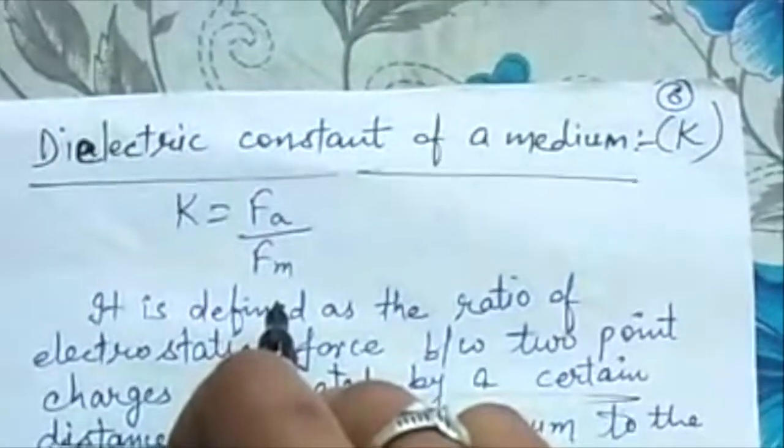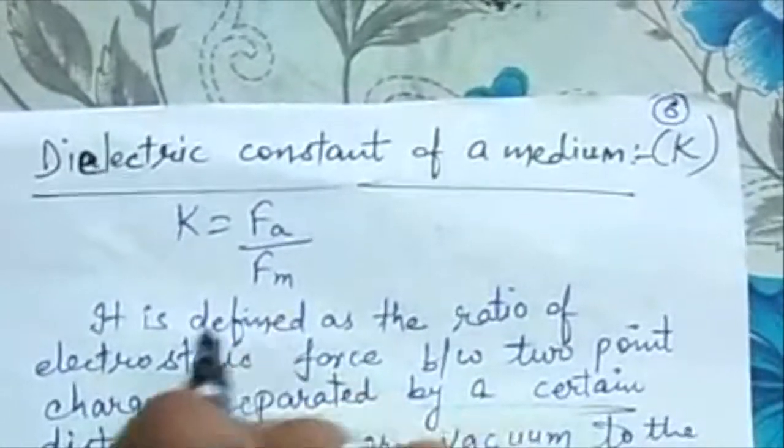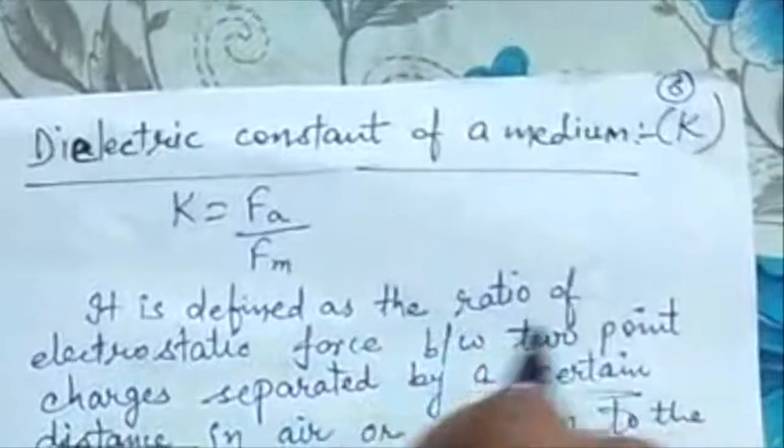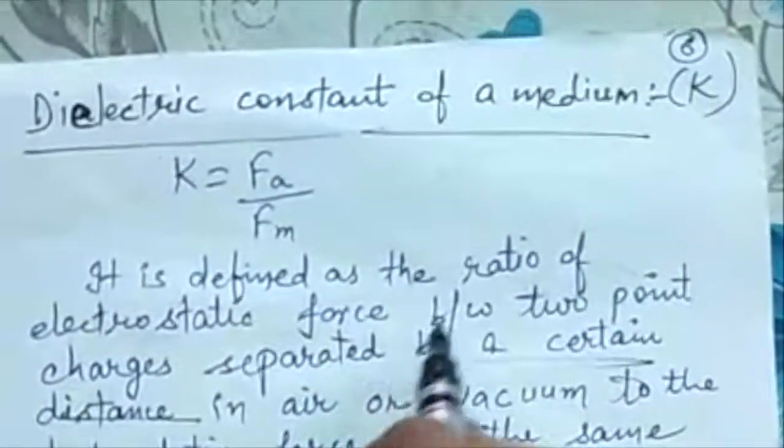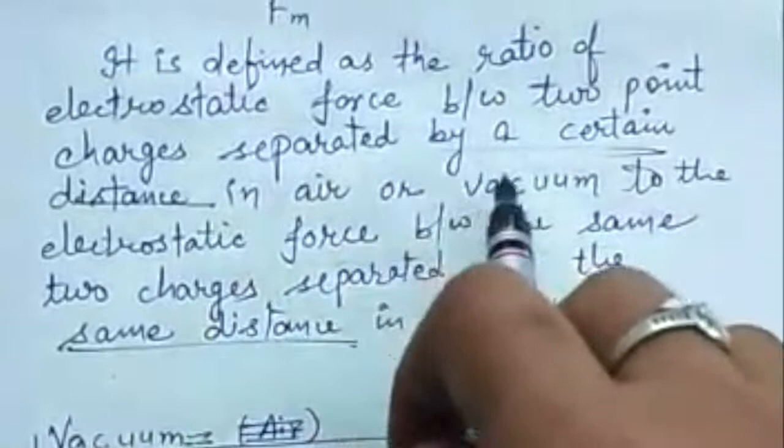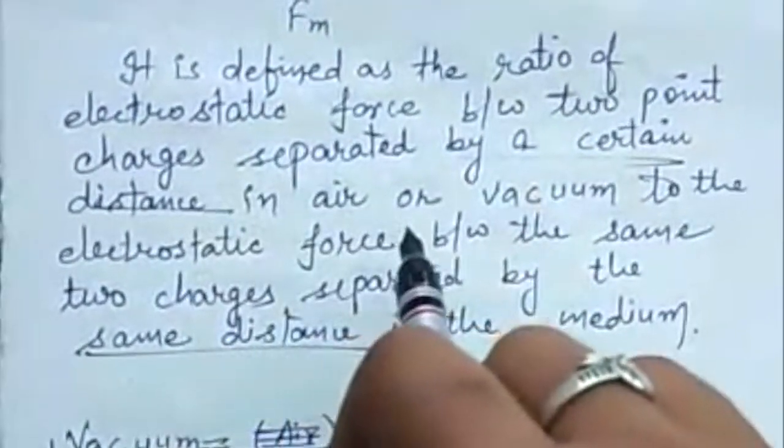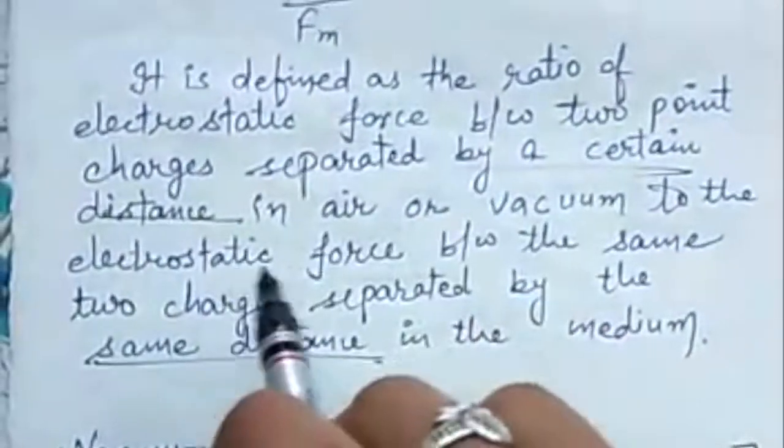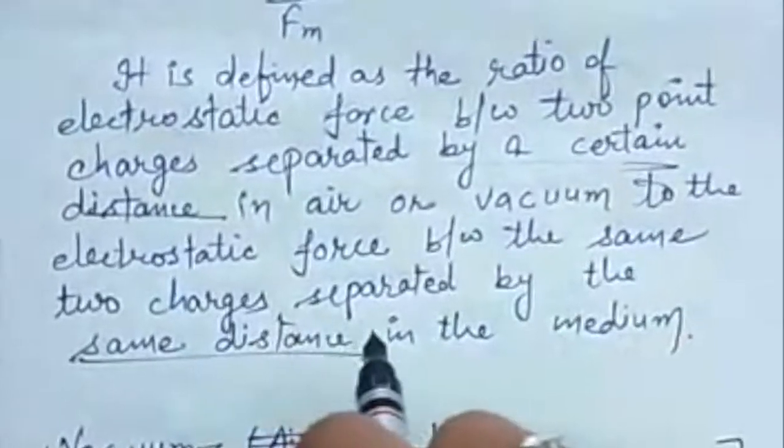It is defined as the ratio of electrostatic force between two point charges separated by a certain distance in air or vacuum to the electrostatic force between the same two charges separated by the same distance in the medium.